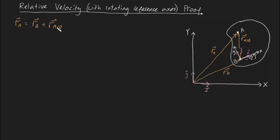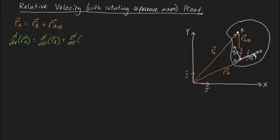Now this formula wasn't too hard to derive, but where it gets tricky is differentiating this to find the absolute velocity of point A. On the left-hand side we get d/dt of R_A, and on the right-hand side we get d/dt of R_B plus d/dt of R_AB. Rather than write R_AB, I'll write it as a distance x in the lowercase i-hat direction and a distance y in the lowercase j-hat direction — so the vector xi plus yj.